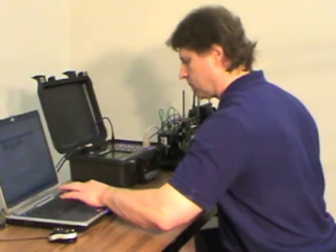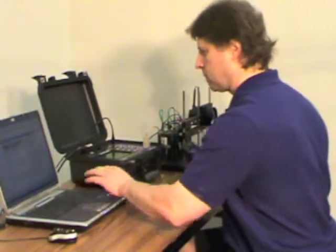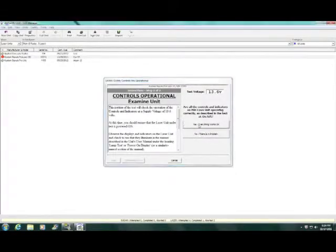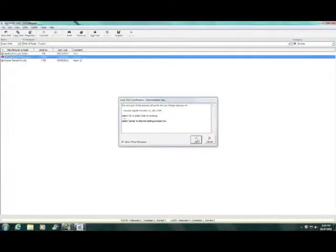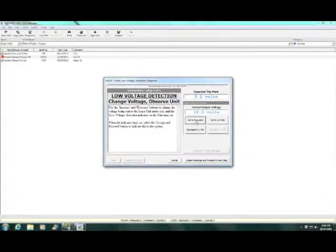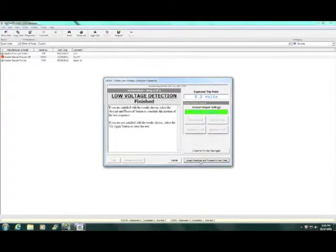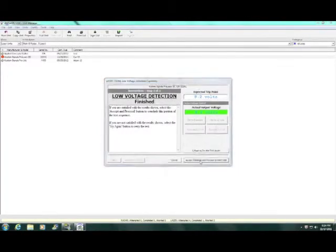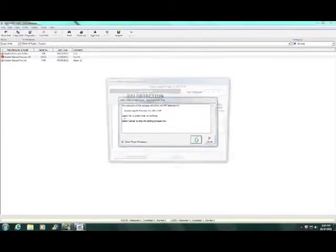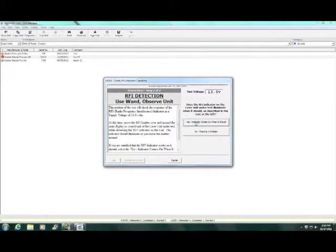We are now ready to run the computer-based test. The first set of tests we will run will be controls operational. The operator checks the unit and then puts into the computer the results of the controls operational, the low voltage detector test and the RFI detection test.